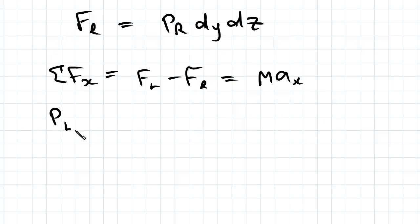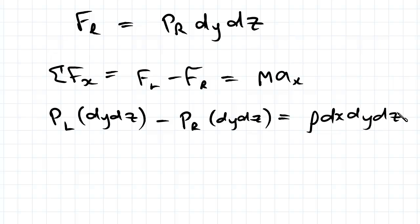So if we expand that all, we get pL dy dz minus pR dy dz equals rho dx dy dz, which is the volume of the small element we're considering, and multiplying that by ax.